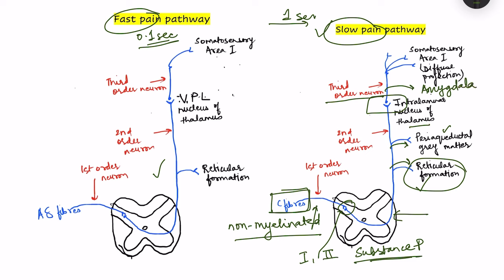These collaterals are important: the reticular formation is responsible for keeping us awake, which is why when we are in pain we cannot sleep properly. Collaterals to the amygdala are responsible for the emotional responses to pain — pain has an emotional component unlike other sensations. Collaterals also go to the hypothalamus, which is responsible for the autonomic responses to pain: increased heart rate, increased blood pressure, and changes in smooth muscle motility.